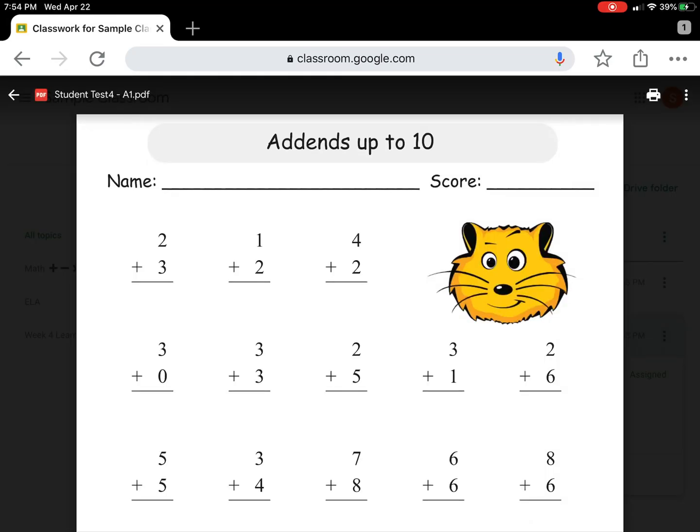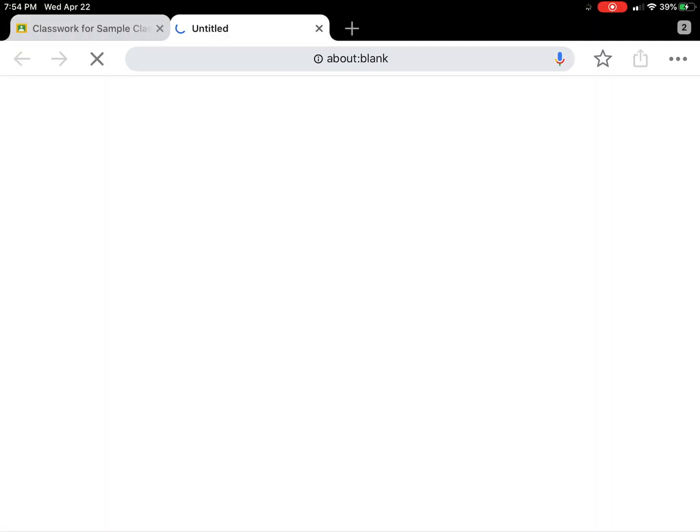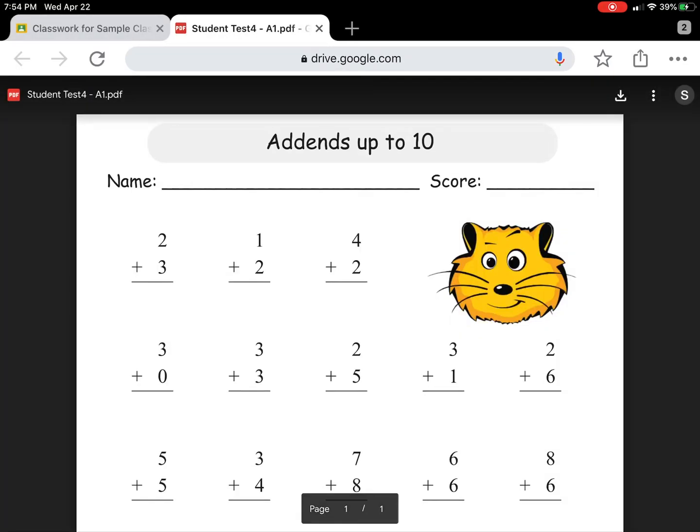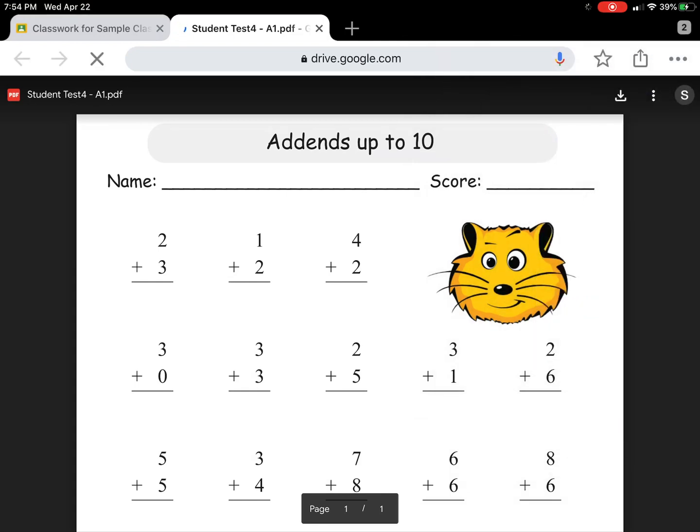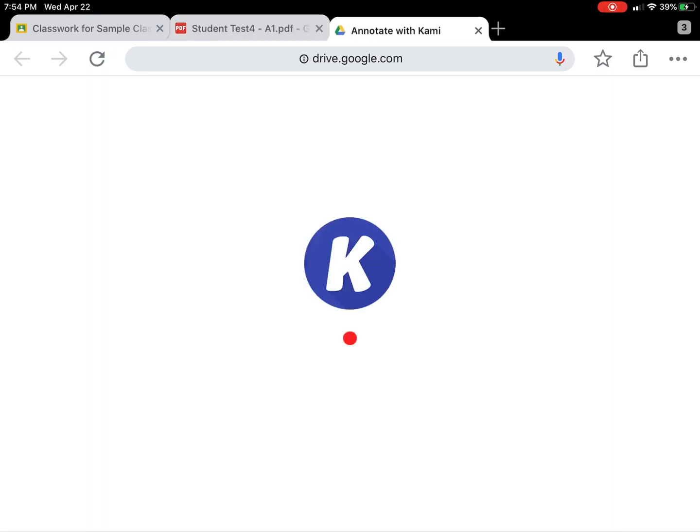In the upper right next to the printer icon select those three dots. We're then going to select open in new window. Then select the three dots going horizontally, scroll down and select request desktop site. When we do that we can now select open with annotate with Kami.